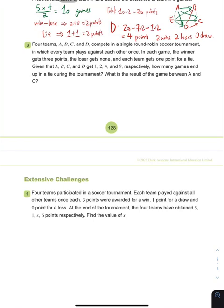Alright, now we are moving on to extensive exercises three. It says that four teams are competing in a single round-robin football tournament in which each team plays against each other once. The winner gets three points, the loser gets none, and each team gets one point for a tie.